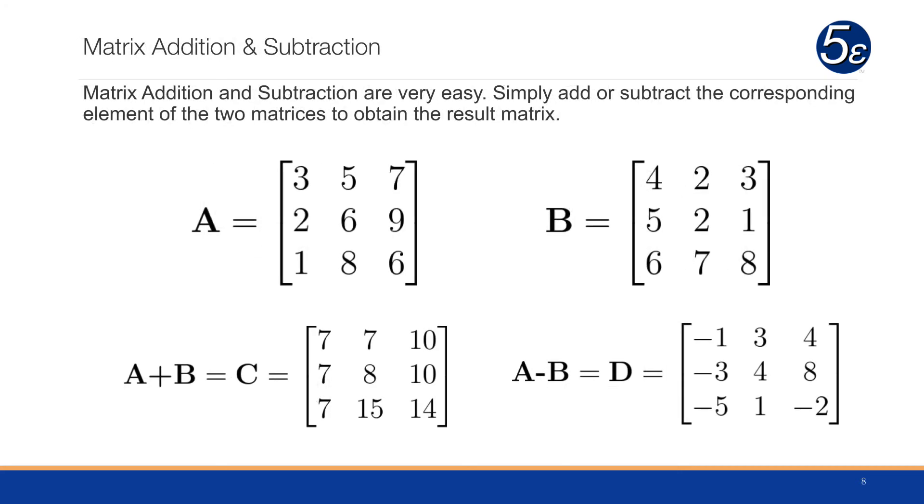When we add and subtract matrices, it's actually pretty simple. To add matrix A and B together, we add the corresponding elements of each matrix to obtain the resulting matrix. We take 3 plus 4 and put that into the same element of the C matrix. It's important to note that if you're going to add two matrices together, they have to be the same dimensions. For subtraction, it's the same thing.